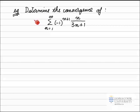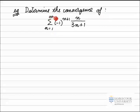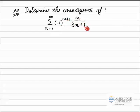In this example, we've been asked to determine the convergence of this infinite series — the sum from n equals 1 to infinity of minus 1 to the n plus 1, multiplied by n over 3n plus 1.